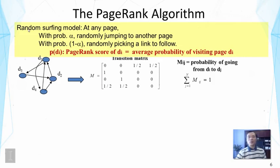Imagine a random surfer is really surfing like this — we can ask the question: how likely, on average, would the surfer actually reach a particular page like d1, d2, or d3? That average probability of visiting a particular page is precisely what PageRank computes. The PageRank score of a document is the average probability that the surfer visits that page. Intuitively, this captures the in-link count, because if a page has a lot of in-links it has a higher chance of being visited.